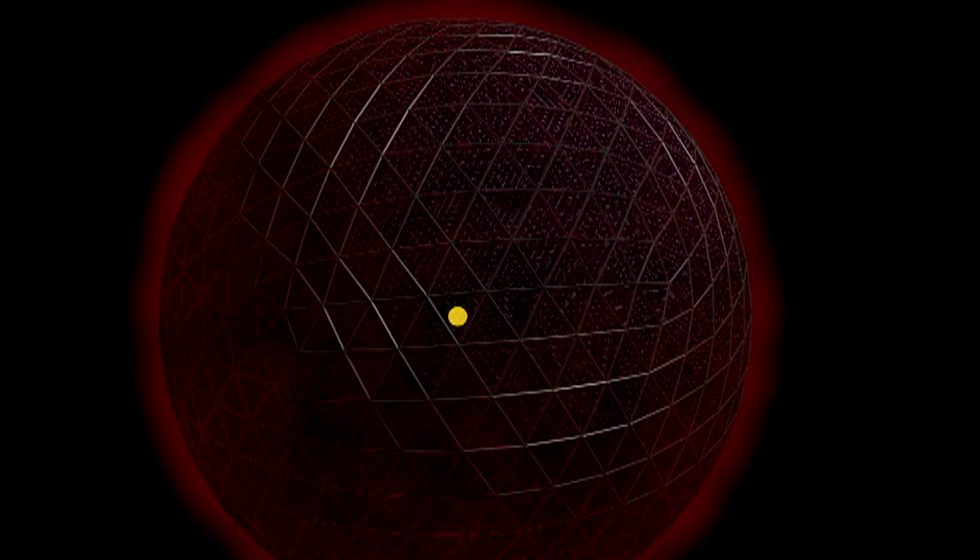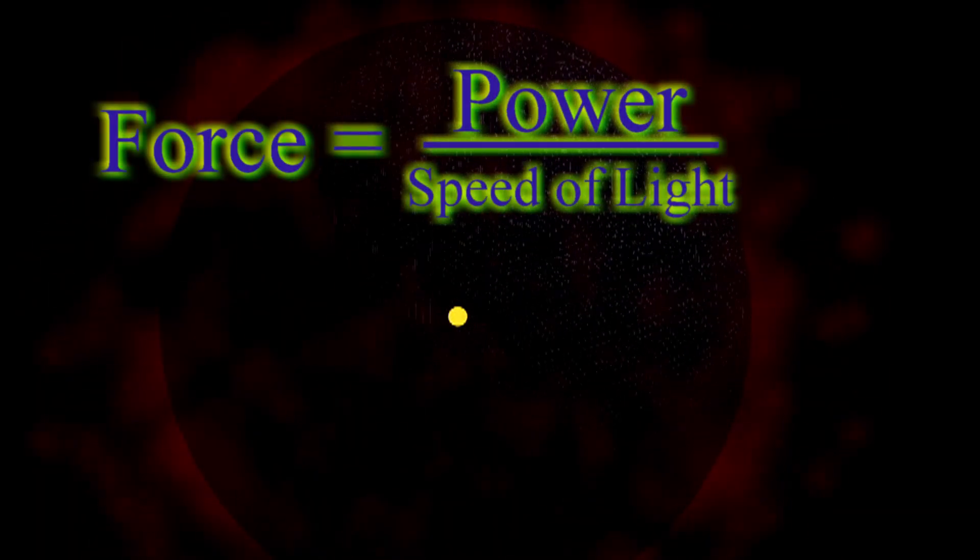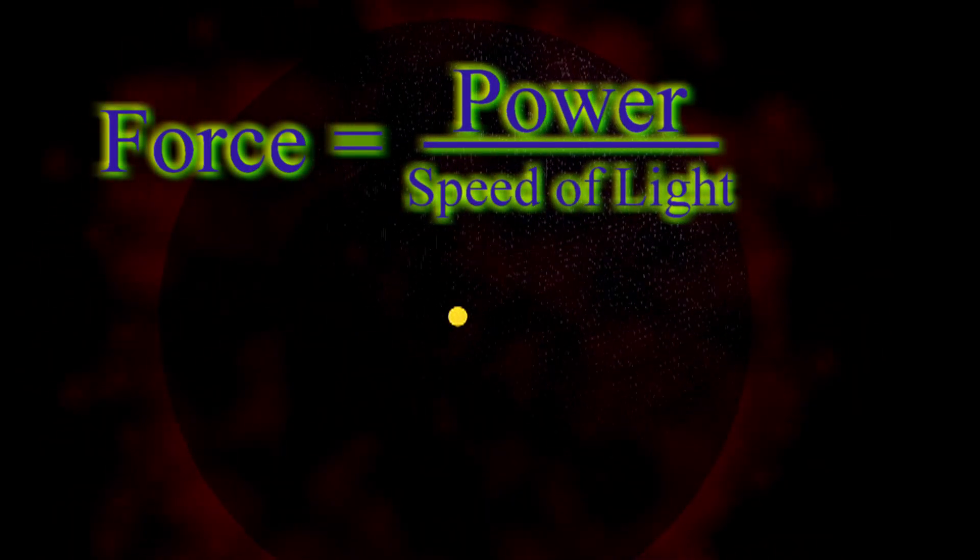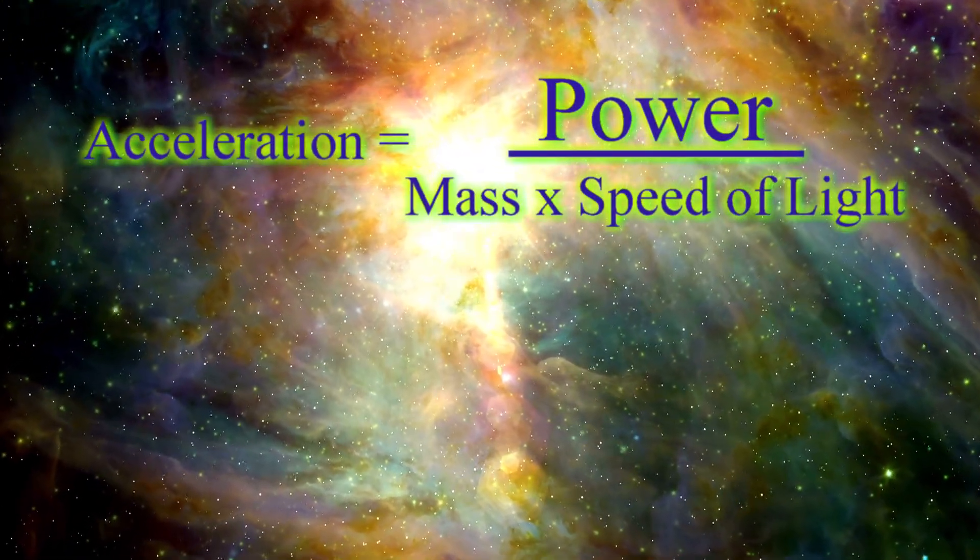Photons, the particle of light, are nothing but momentum, they have no mass. So if an object is emitting asymmetrically it will begin to have a net force on it equal to the emitted power divided by the speed of light, or an acceleration equal to the emitted power divided by the mass of the object and the speed of light.